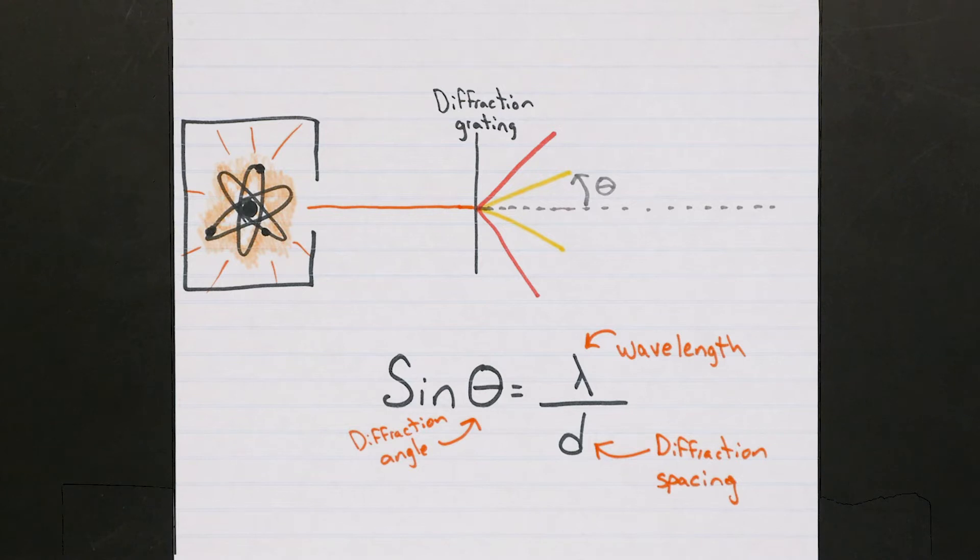This set of emitted photons, also called a line spectrum, acts like a unique signature, or barcode, for every unique atom in the sample, and allows us to determine exactly which elements are present.